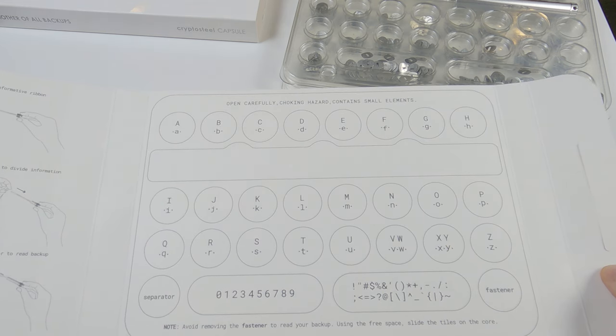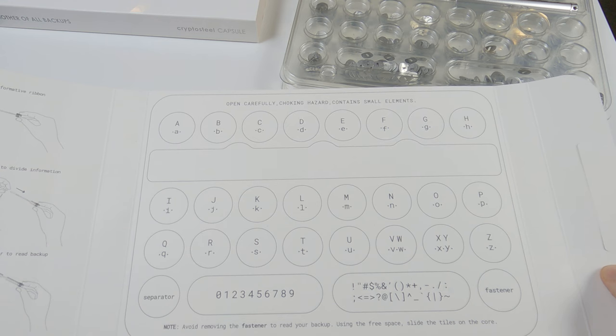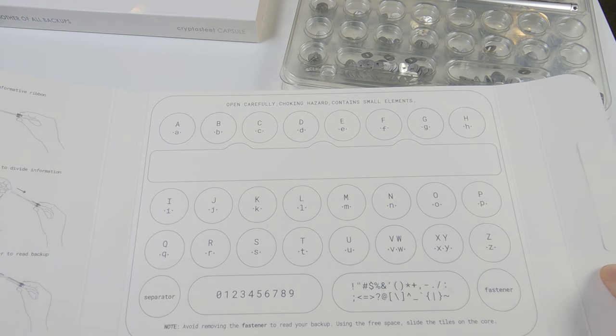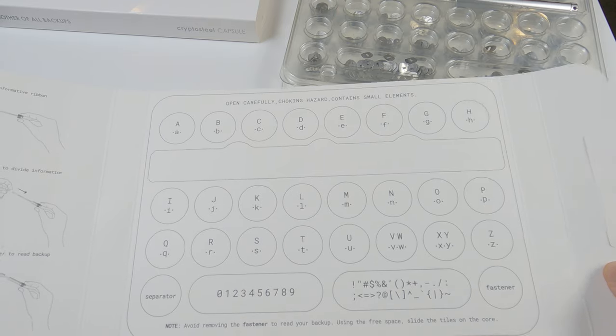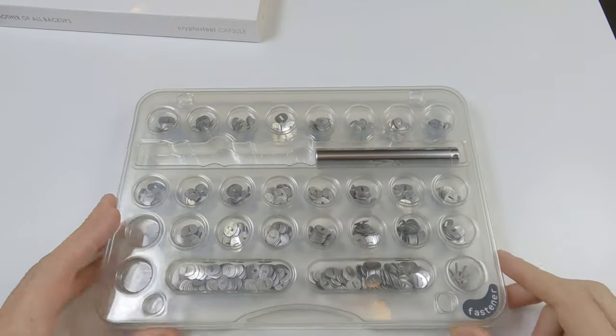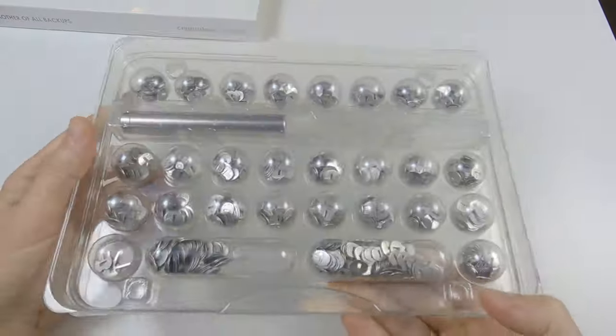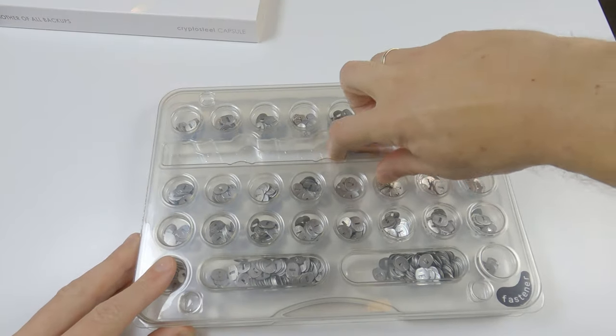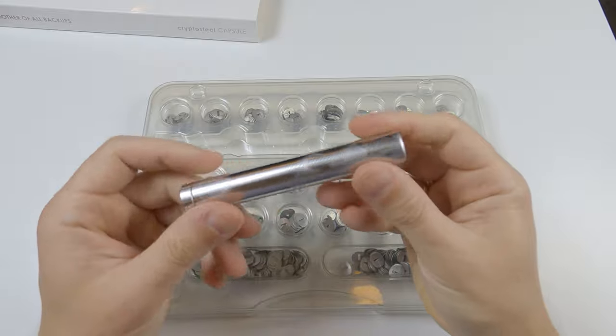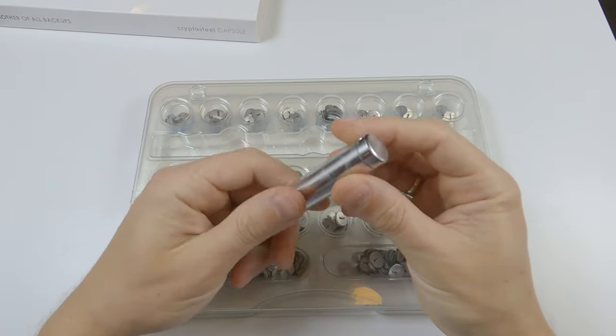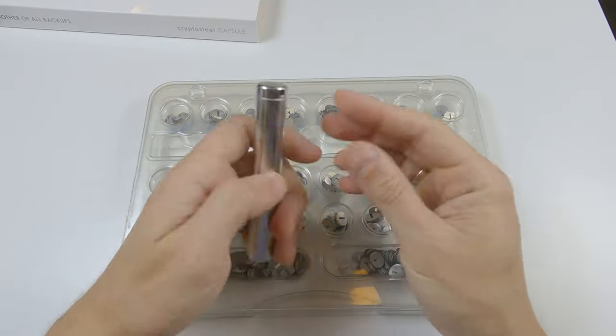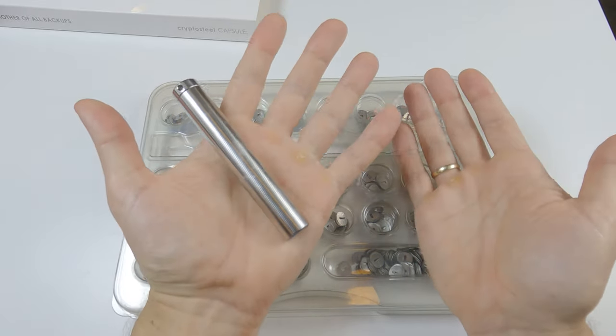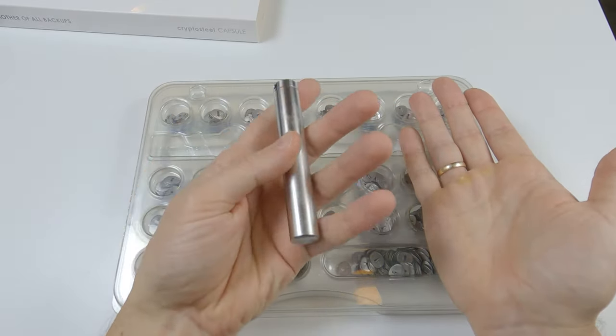You can notice that tiles have both capital and small letters, because it can store not only seed phrases, but any passwords. Ok, let's see the box closer. Here is the capsule. It is stainless steel. There is a hole in the cap, so you can use the rope to bind it to something or hang it on your neck.